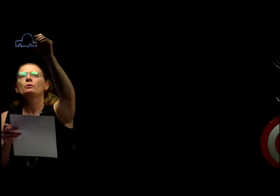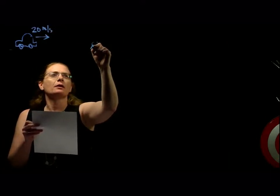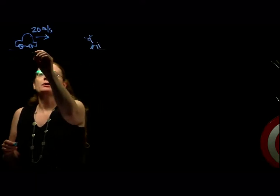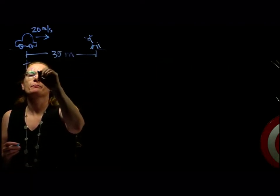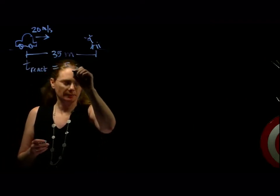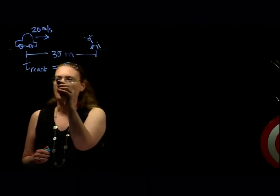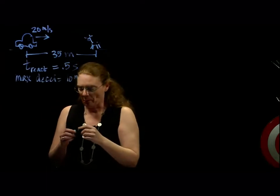We're going to use our standard problem-solving process, which I always start with a picture. Here we've got a car going down the road at 20 meters per second, and somewhere down the road there's a deer. We know that initially there's 35 meters between the two, and we have a reaction time of half a second. We started at 20 meters per second, 35 meters, and the maximum deceleration of the car is 10 meters per second squared.